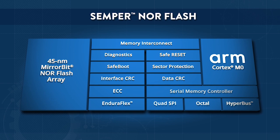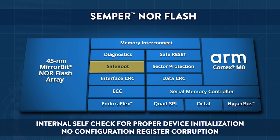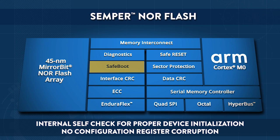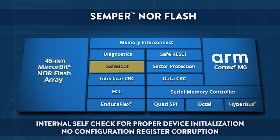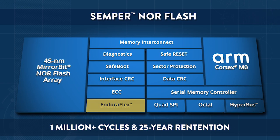In addition to the ECC feature, Semper Flash has many other features to help achieve functional safety. At every power-on, the flash device executes a set of internal self-checks called SafeBoot to ensure that the device is functioning properly and that no configuration registers have been corrupted. It then provides a status flag indicating the result to the host controller. Semper Flash also has data and interface CRC protections to verify integrity during reads. And a new EnduraFlex architecture enhances data retention and endurance.